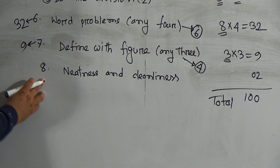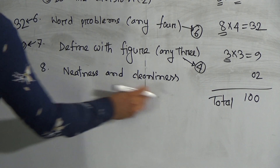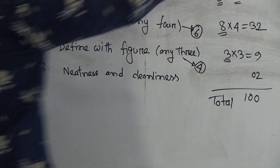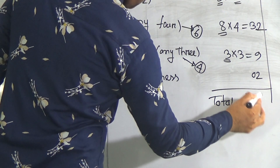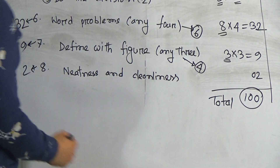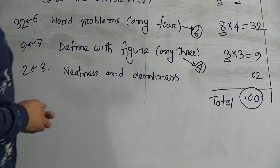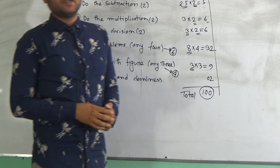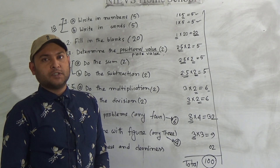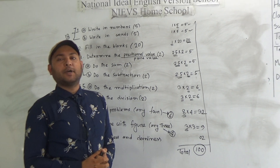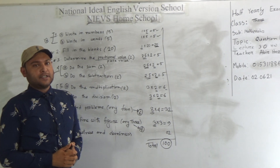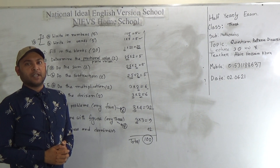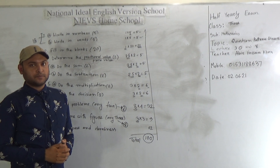For neatness and cleanliness there are two marks. So in total, there are 100 marks. I hope you understood the question pattern. Practice at home the whole subject whatever we have learned. Take care and stay safe with your parents. See you soon, and till then, Allah bless you.